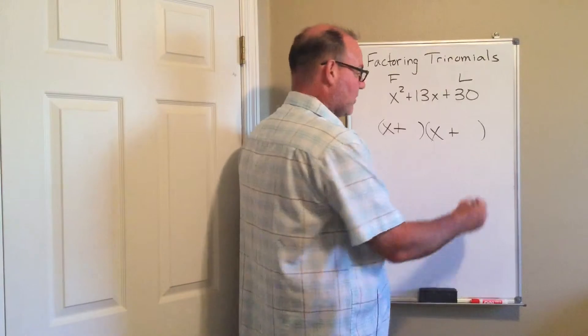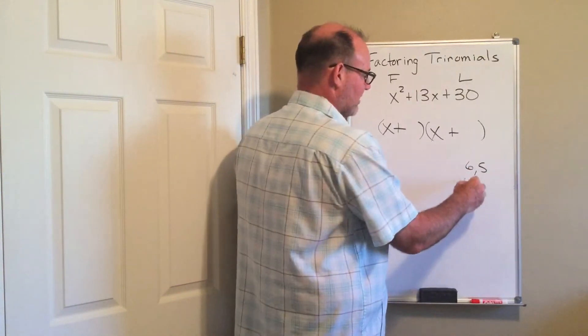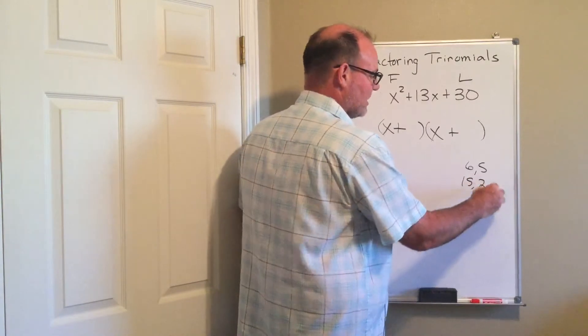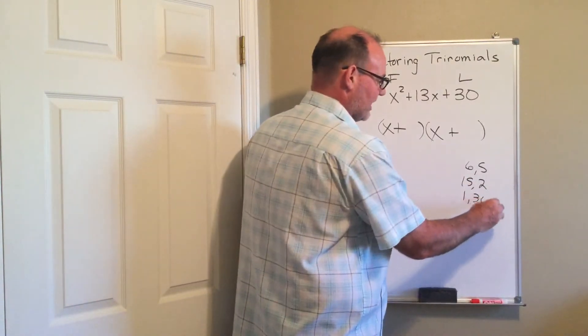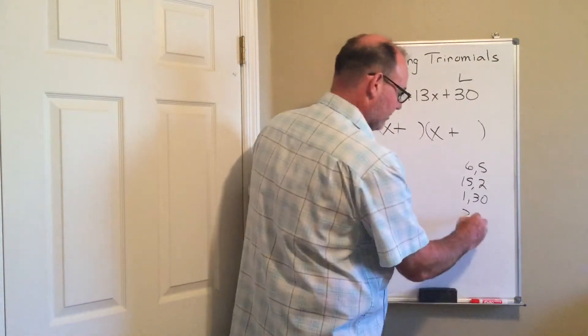And so the factors of 30, well, there's 6 and 5. That adds up to 11. That's not right. And then there is 15 times 2. That adds up to 17. There is 1 and 30. That's not right. And then we stumble upon the right answer, 3 and 10.